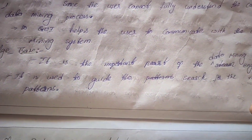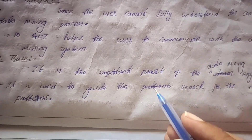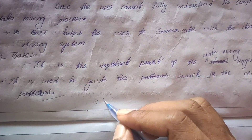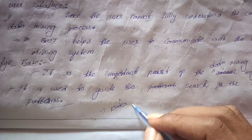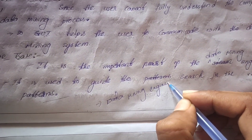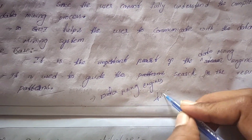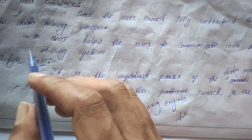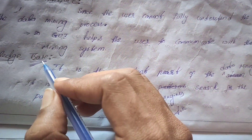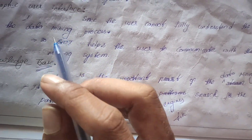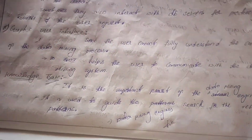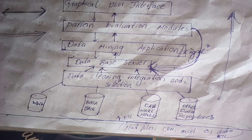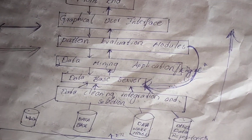The knowledge base is an important part of the data mining engine and is used to guide the search for pattern results. The data mining engines also take inputs from the knowledge base. The data contained in the knowledge base is extracted from data sources based on user requests. That covers the architecture of typical data mining systems.